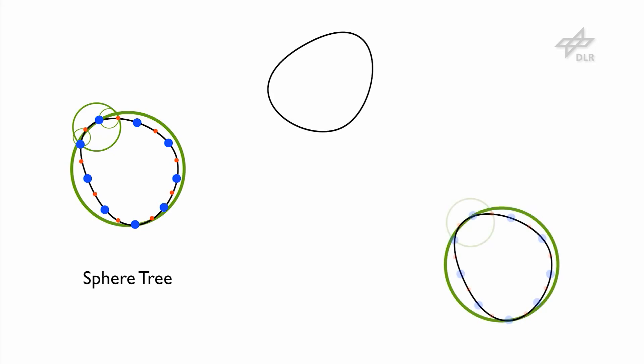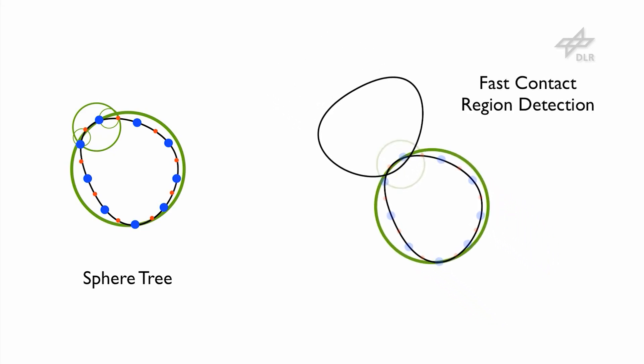As soon as the objects make contact, our algorithm rapidly traverses the sphere hierarchy to find the colliding region. The points in this region are checked for collision in a level of detail manner.